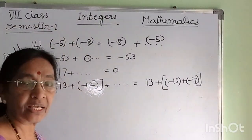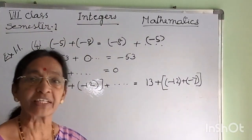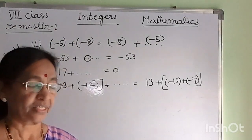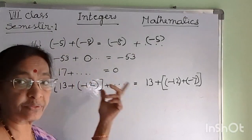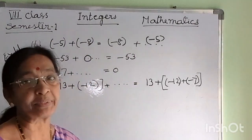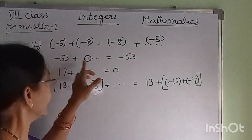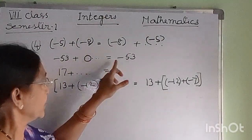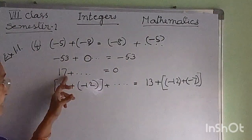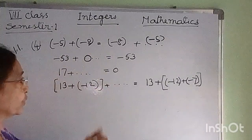Next: minus 53 plus blank equals minus 53. The answer is 0. Zero is the additive identity of integers — when 0 is added to an integer, we get the same integer. Therefore minus 53 plus 0 equals minus 53.